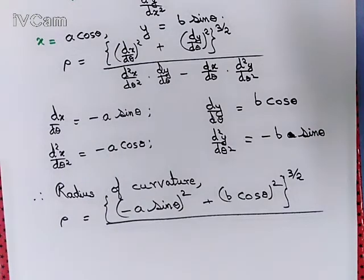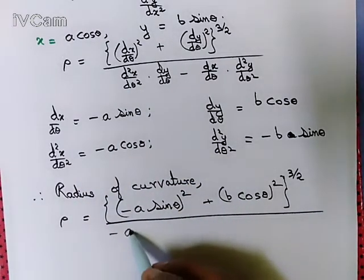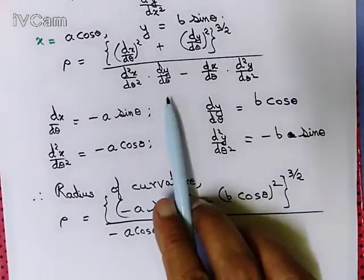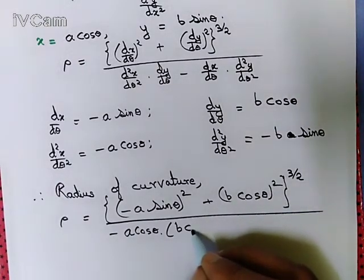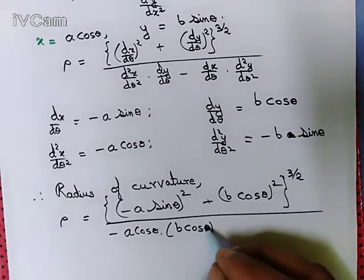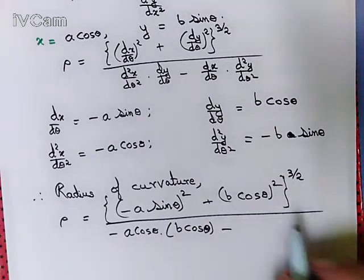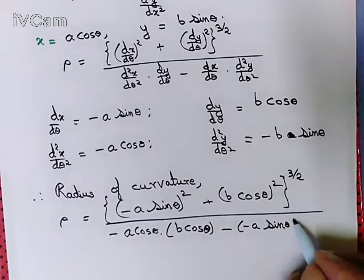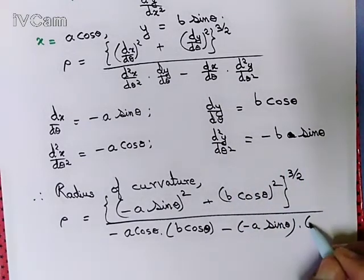Divided by: d²x/dθ² = −a·cosθ, multiplied by dy/dθ = b·cosθ, minus dx/dθ = −a·sinθ, multiplied by d²y/dθ² = −b·sinθ.